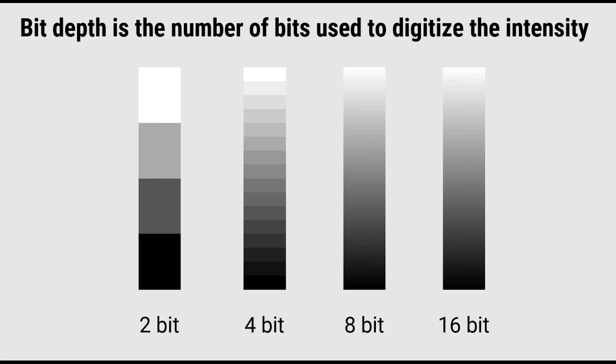On this slide, I have examples of four different bit depths. As you can see, a 2-bit image can only have four different values, and therefore can only have four different shades of gray. A 4-bit image can have 16 different values, an 8-bit image can have 256 different values, and a 16-bit image can have 65,536 different values.